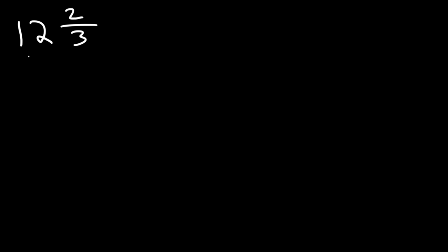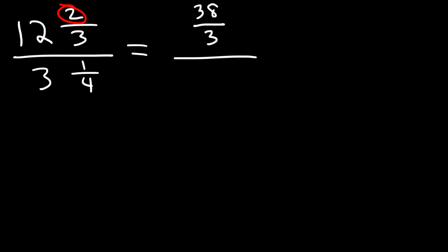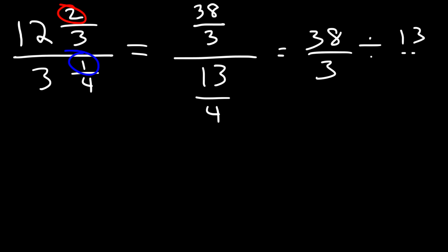Now let's work on our third example: 12 and 2/3 divided by 3 and 1/4. Let's convert each mixed number into an improper fraction. 12 times 3 is 36, plus 2, that's 38. On the bottom, 3 times 4 is 12, plus 1, that's 13. So we have 38 over 3 divided by 13 over 4, which we rewrite as 38 over 3 times 4 over 13.